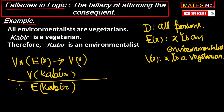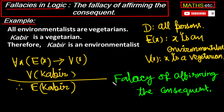This argument form is not a valid argument form — it contains a fallacy. The antecedent is E(x), the consequent is V(x), and affirming the consequent gives the fallacy of affirming the consequent. So this argument form is not valid, it contains a fallacy of affirming the consequent. That is why the original argument (about Kabir being an environmentalist) is not a valid argument.